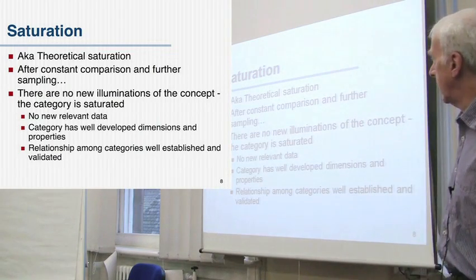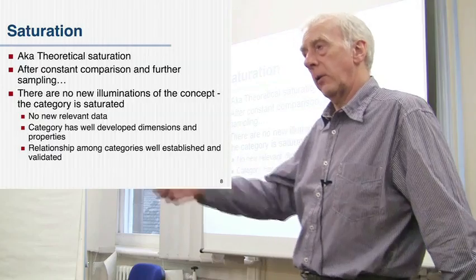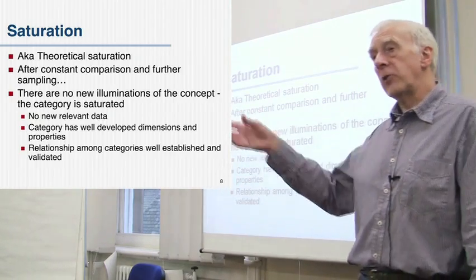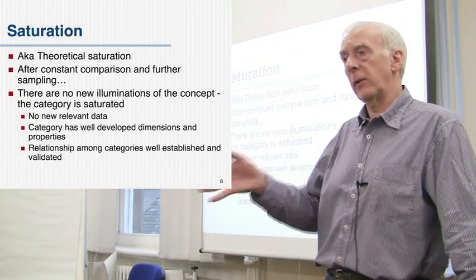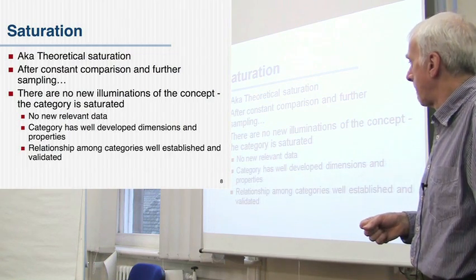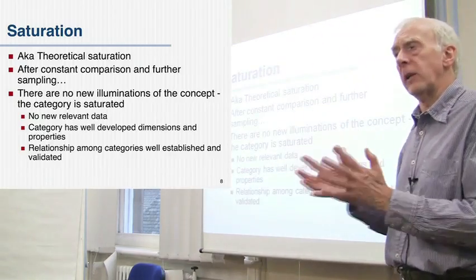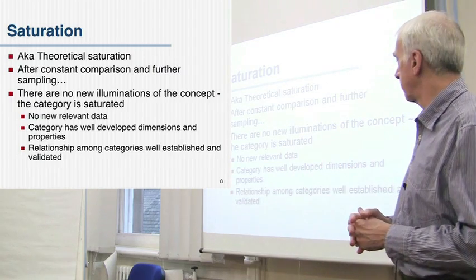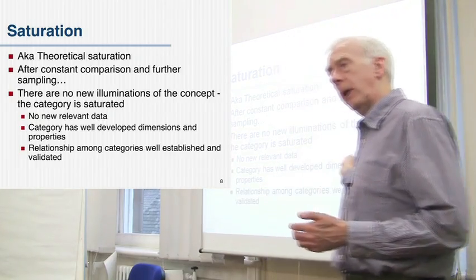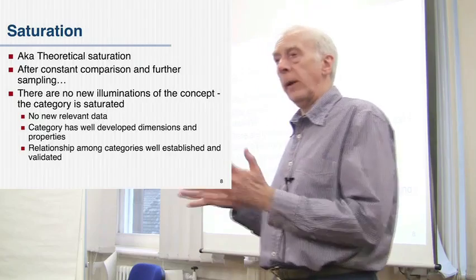Just a couple more words about saturation, otherwise known as theoretical saturation. The idea is that the constant comparison going on - that constant looking back to things coded the same way, comparison with other cases and other settings - would eventually exhaust the possibilities. You can't think of any other ways that you could vary things: no different kinds of individuals, no different kinds of settings, no different kinds of situations or events. There is no new relevant data coming out, no more variations coming up in the data you've collected, so you've exhausted all the possibilities. By that stage, your category has well-developed dimensions and properties - all the possibilities of variation within that code have been identified and covered.